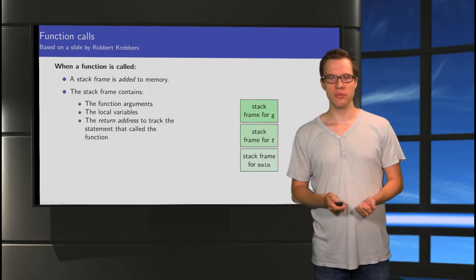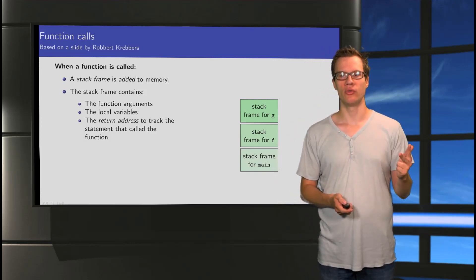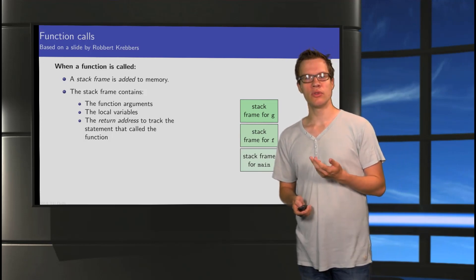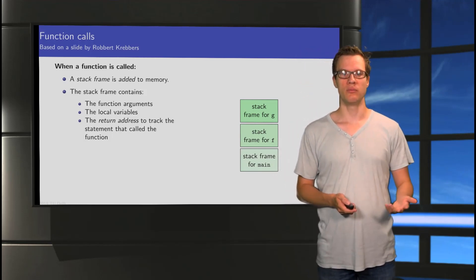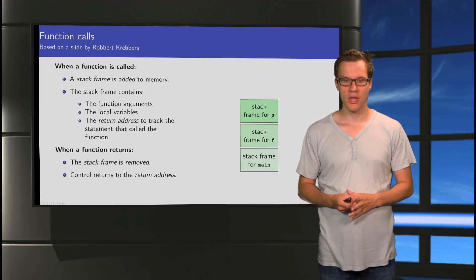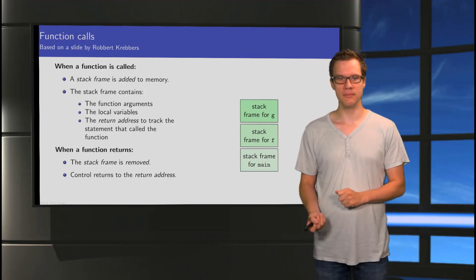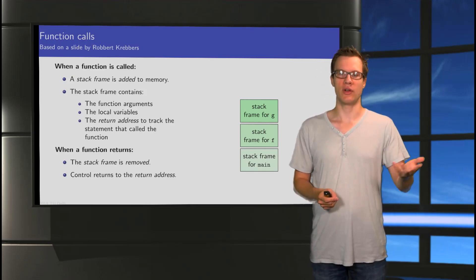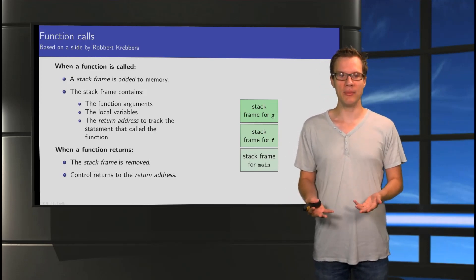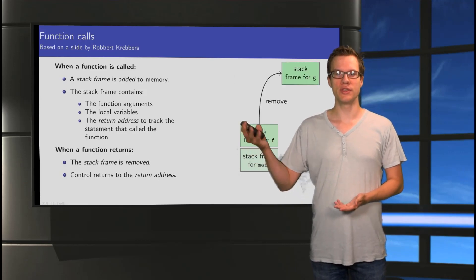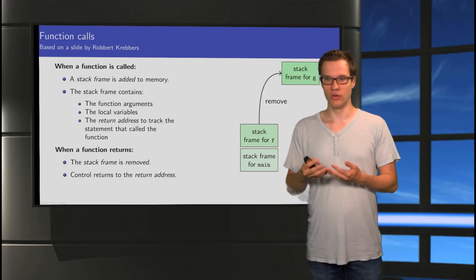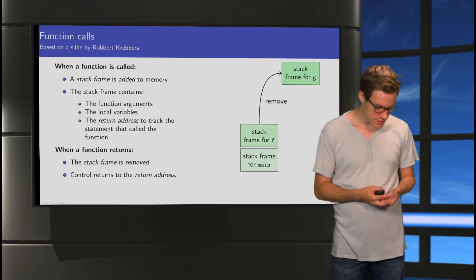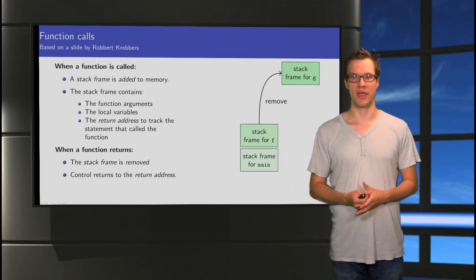So, function arguments, local variables, and also the return address. Now, what about when a function is done, when we return from a function? Well, in that case, we remove the stack frame, and we use this return address to know where we need to go back to. So, imagine that function g is done. What happens? Well, we remove the stack frame. So, stack frame for g gets removed from our stack. This space is freed up, and it can be reused for something else.